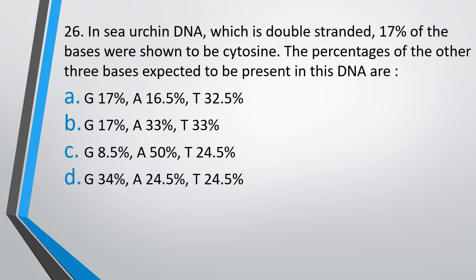Question number 26. In sea urchin DNA, which is double stranded, 17% of bases were shown to be cytosine. The percentage of the other three bases expected to be present in this DNA are. The correct option is Option B, that is guanine would be 17%, adenine would be 33% and thymine would be 33%.